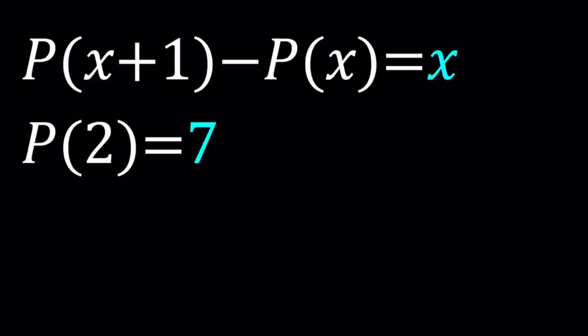So P of X plus 1 minus P of X is equal to X, and we also know that P of 2 is equal to 7. So what is the question? We're going to be solving for P of X. We're going to find an expression for P of X.